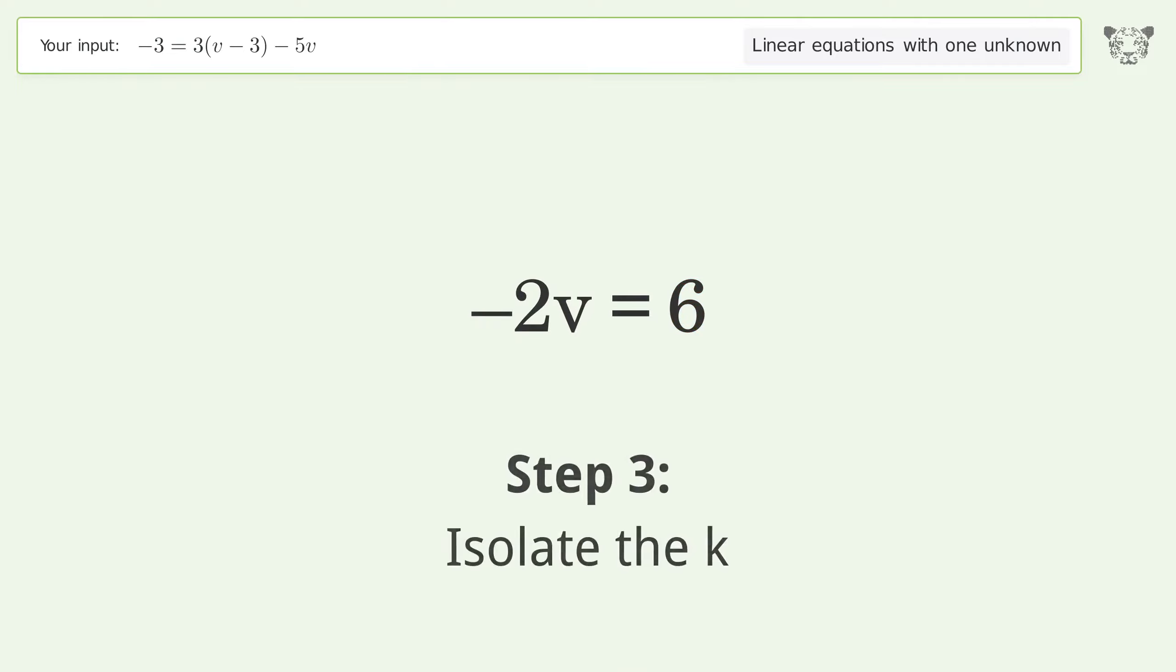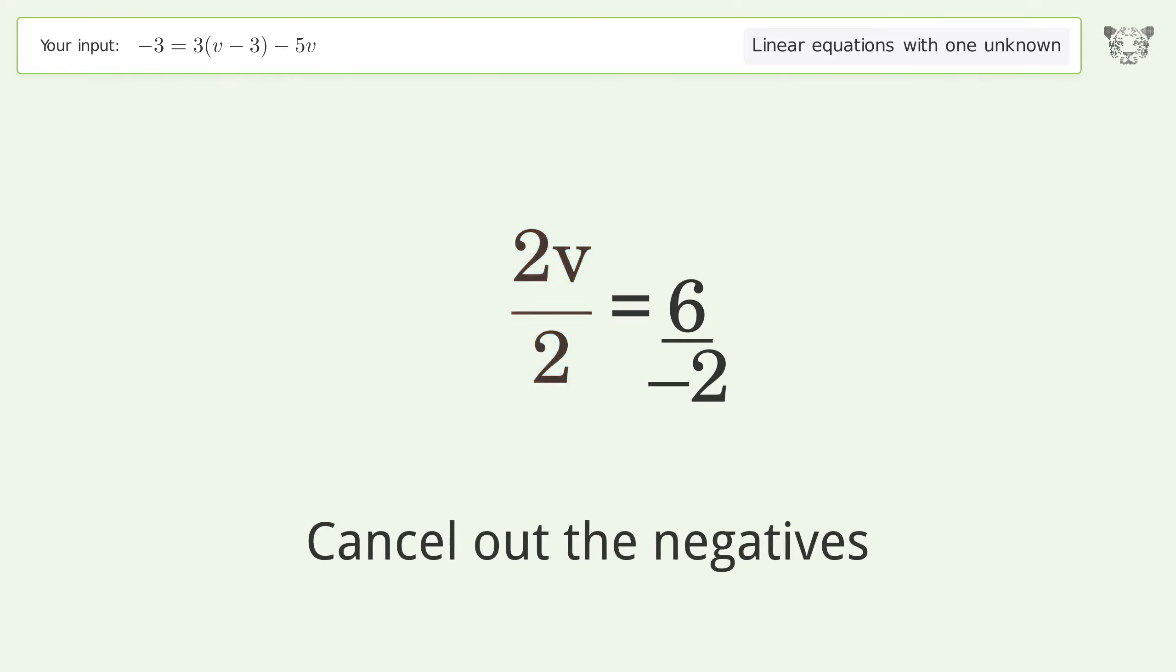Isolate the v. Divide both sides by negative 2. Cancel out the negatives. Simplify the fraction.